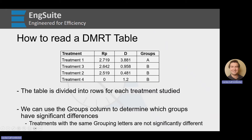The table is divided into rows for each treatment. You'll notice these aren't necessarily in treatment 1, 2, 3, 4 order as they're put into the function. That's because they are sorted by the mean in decreasing order. We're going to use that grouping column to determine which groups have significant differences. If they share a group letter, that means they are not significantly different.